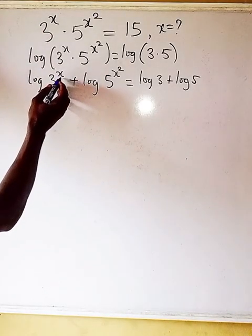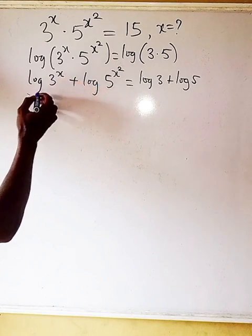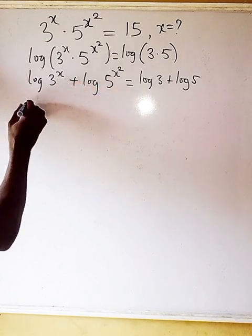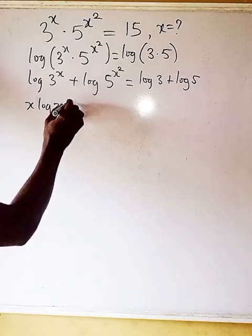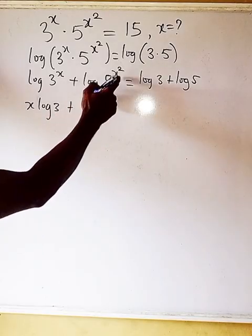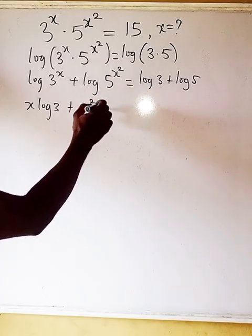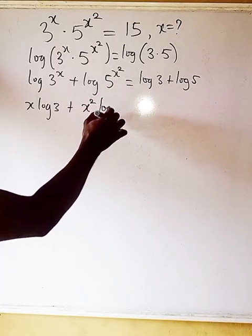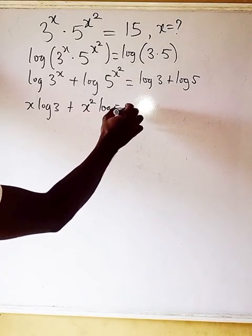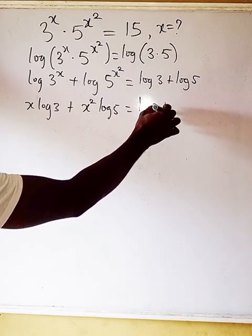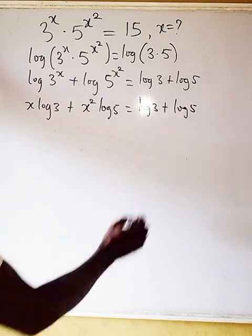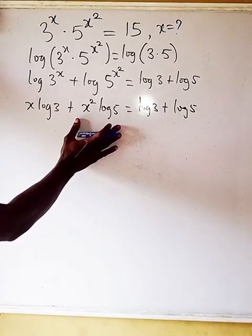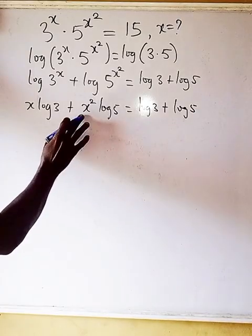Now when you have a log raised to a power, the power comes down and multiplies. So we get x·log 3 plus x²·log 5 equals log 3 plus log 5.